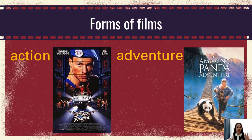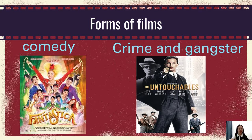Let's talk about the different forms of films. First is action — a genre that typically includes violence, extended fighting, and physical feats. Next is adventure, a genre whose plot features elements of travel. Next one is comedy, a category of film where the main emphasis is on humor, designed to make the audience laugh. Next is crime and gangster — films developed around sinister actions of criminals or gangsters.